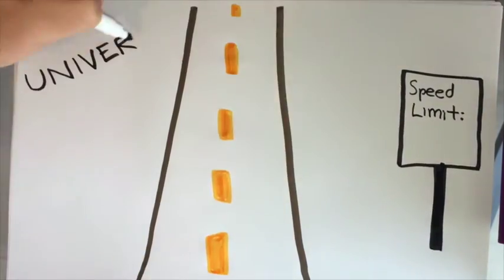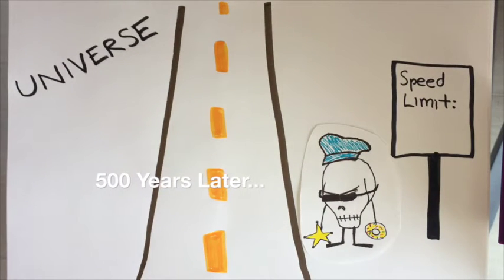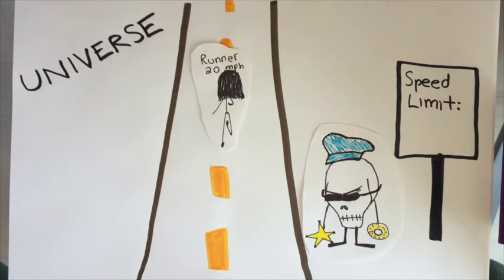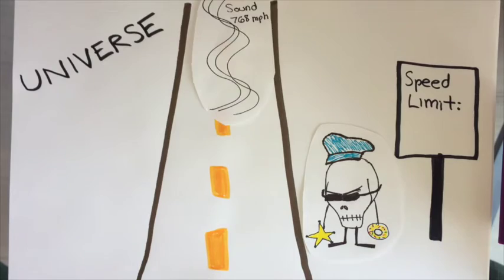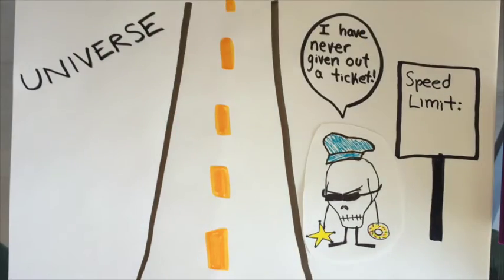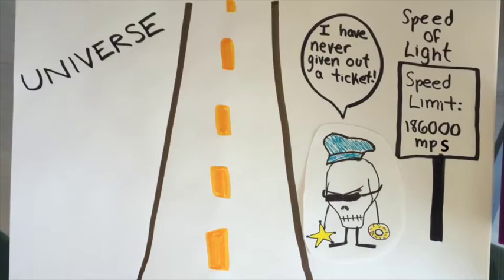Did you know that the universe has a speed limit? And no matter how long or how hard anyone has tried, no one has ever passed it - not cars, not people, not sound or information, not even rocket ships. This speed limit happens to be 186,000 miles per second, the speed of light, C.